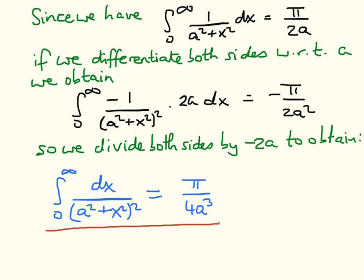What we can do now is calculate the integral we're asked to obtain, written down here at the end. We recognise that if we differentiate this with respect to the parameter a, we are going to increase the power on the bottom. So let's do that and see what comes out. We take the derivative with respect to a through the integral sign — that's what the Leibniz integral rule tells us to do.